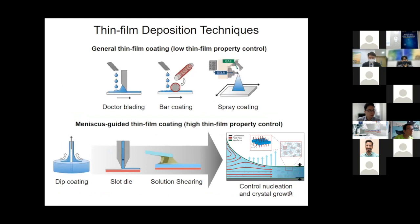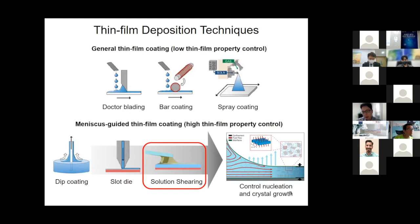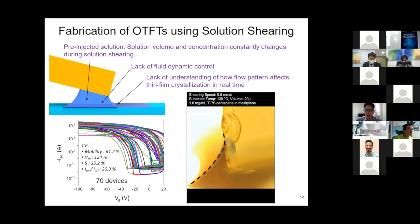My main focus is working on solution-based coating techniques. I'm particularly interested in meniscus-guided coating techniques, where we can control thin film properties by controlling nucleation and growth rate using the meniscus as a guide. Among these, I'm especially interested in the solution shearing technique — analogous to blade coating — where we have a heated substrate and sandwich a solution between a blade and a substrate. As we move the blade or the substrate, we generate thin film over a large area. Solution shearing has been used very commonly for generating organic field effect transistors.